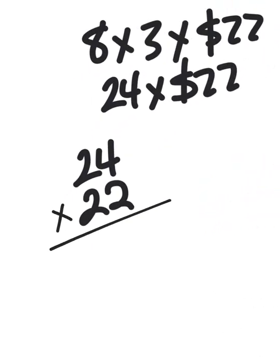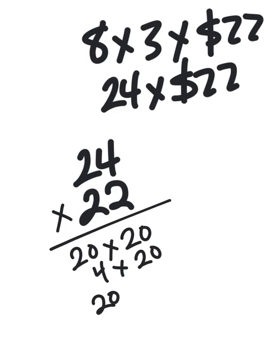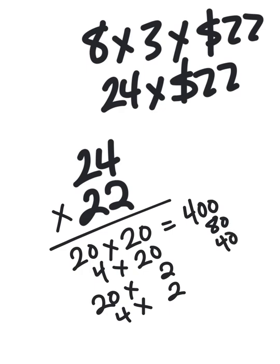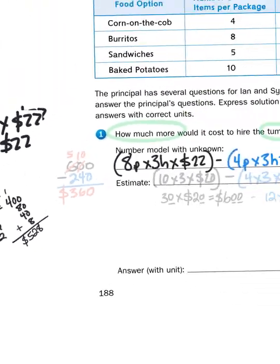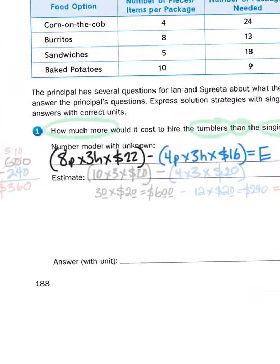So 24 times 22 is really just saying 20 times 20, and then 4 times 20, and then 20 times 2, and 4 times 2. Well, 20 times 20 is 400, 4 times 2 is 80, 20 times 2 is 40, and 4 times 2, of course, is 8. And I add all those together, and I'm going to get $528. I've got to use that unit. So my first partial product is $528.